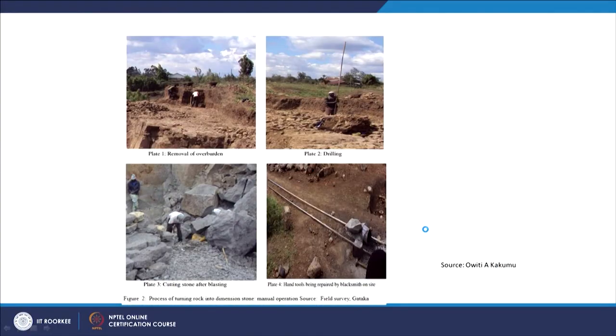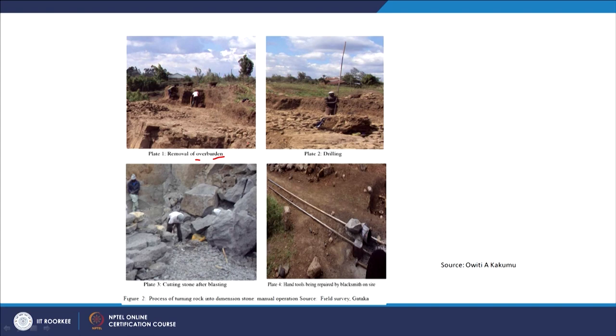Looking at the quarrying process, one person I would like to refer to is O.V.T. Akumu from the University of Nairobi — a colleague who worked on stone quarrying as a building economist, streamlining artisanal dimension stone production. He looked at the processes: removal of overburden in the quarry, then drilling of the stone, cutting stone after blasting, and finally chiseling — using hand tools and delivering it to the site. That is the whole process of turning rock into a dimension stone.